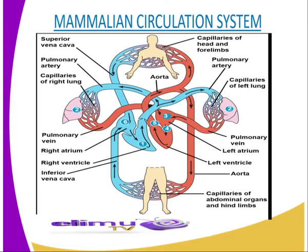Deoxygenated blood from the body tissues enters the right atrium of the heart through the vena cava, and it flows into the right ventricle, from where it is pumped into the pulmonary artery to the lungs for oxygenation. From the lungs, oxygenated blood flows back into the heart through the pulmonary vein. This circulation — where deoxygenated blood from body tissues is pumped from the heart to the lungs through the pulmonary artery, and then oxygenated blood returns to the heart through the pulmonary vein — is called pulmonary circulation. From the heart, oxygenated blood is pumped to the rest of the body through the aorta, and deoxygenated blood from the body tissues returns to the heart through the vena cava. This is called systemic circulation. The systemic part is much longer than the pulmonary part as it transfers blood to every part of the body.